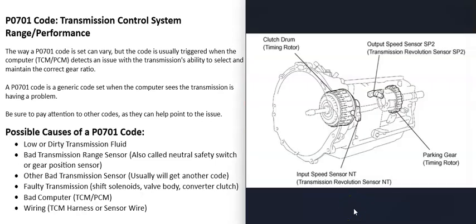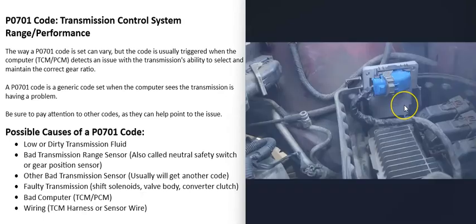A P0701 code is a generic code that the computer sets when it sees a problem with the transmission. The exact reason why the code gets set can vary between manufacturers and vehicle year, make, and model. Usually it's set when the computer detects the transmission is not maintaining the correct gear ratio. One important thing to note is that you're very likely going to get other codes alongside it — pay attention to those, as they can help point you to the actual problem.